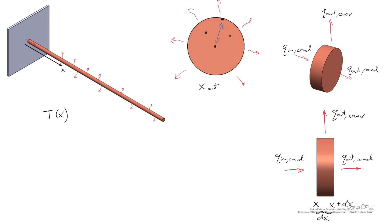A small characteristic length makes it easy for conduction to occur — a real small conductive resistance. Another condition that ought to be true is that our heat transfer coefficient is relatively small. This allows the temperature of the rod to equilibrate in the radial direction, or a direction that is orthogonal to the axis of our extended surface.